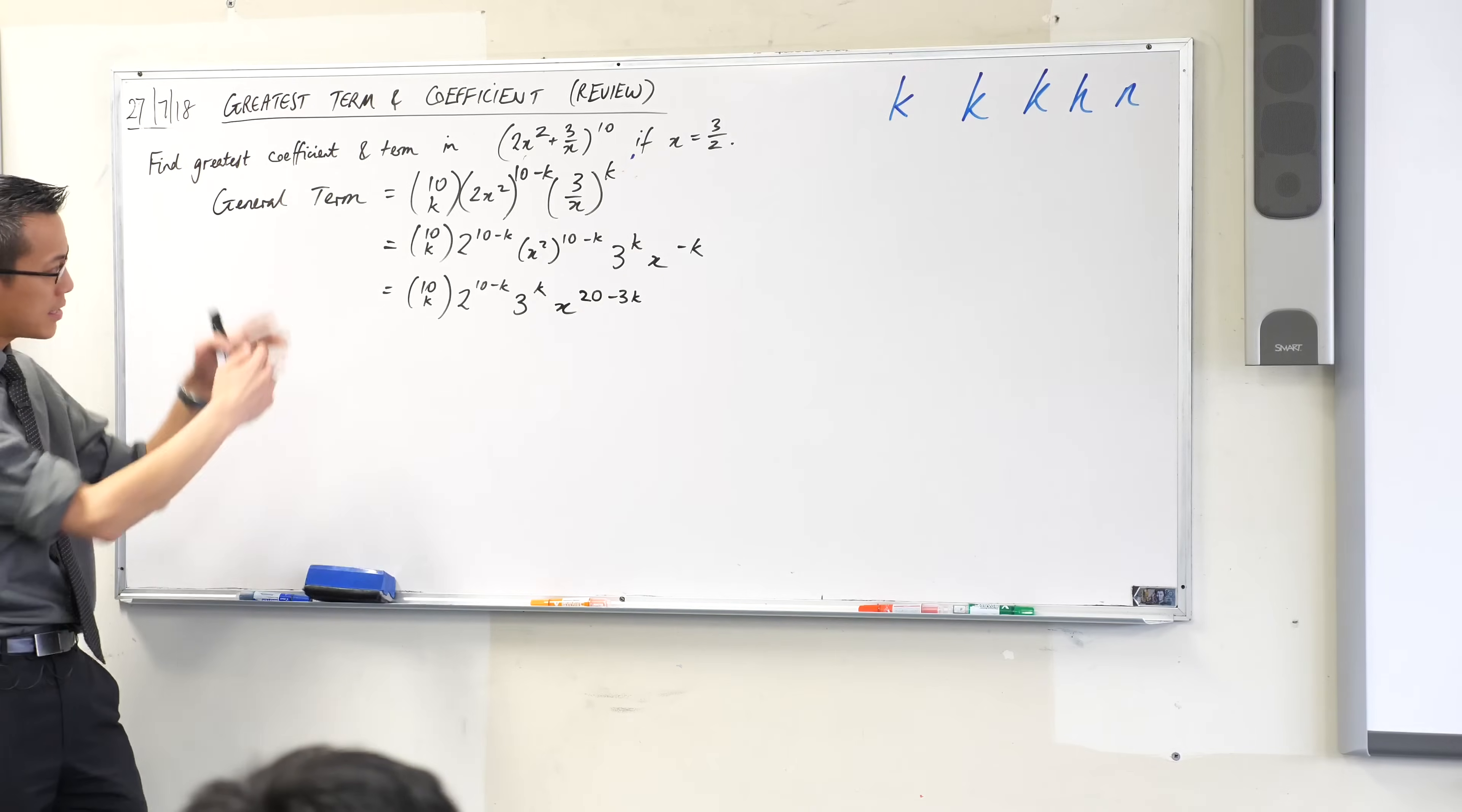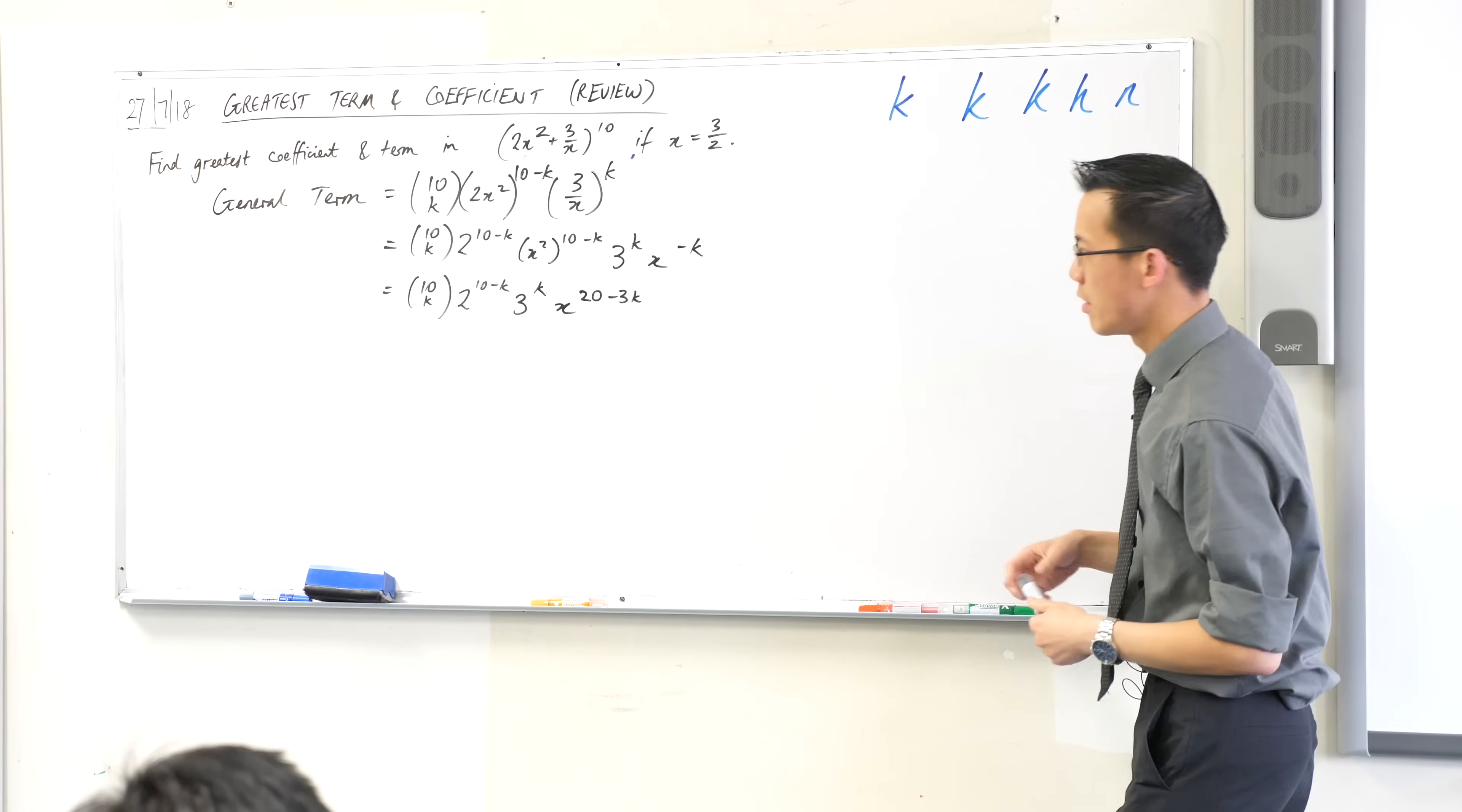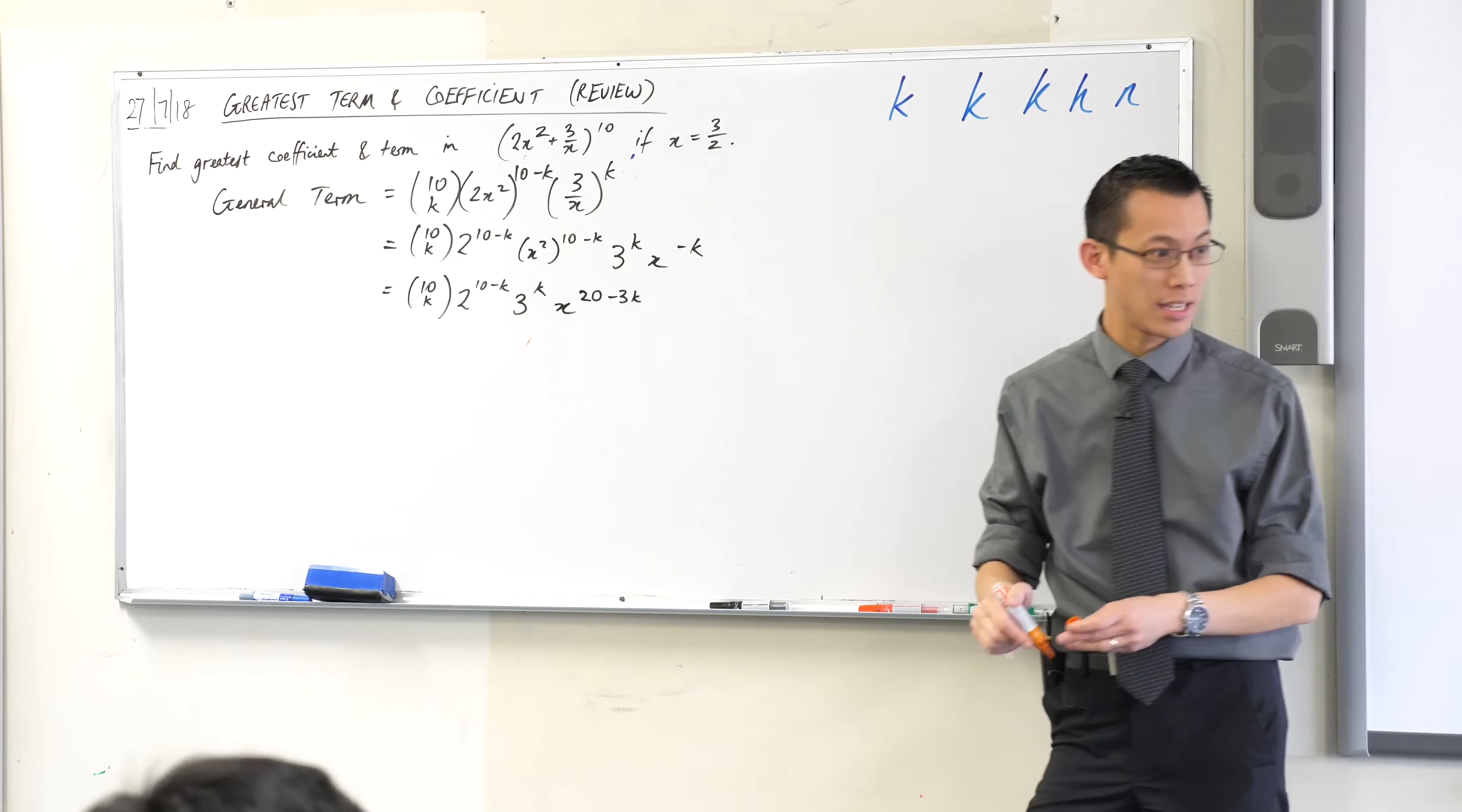Now at this point here, this is a process you need to become pretty comfortable with because you don't just use this particular method, these steps, to solve the greatest coefficient or the greatest term. Another question which you will much more frequently encounter, especially at the HSC level, is find the term which has an x to the power of, and then they'll give you a power, like say x to the power of 14. If you want the x to the 14 term, have a look, what would you want this to be? What would you do with k? Yeah, you want 20 minus 6 to get 14, so you would say k equals 2. And now you can evaluate that and off you go. So this is a process that is worth investing in, you need to do that carefully.